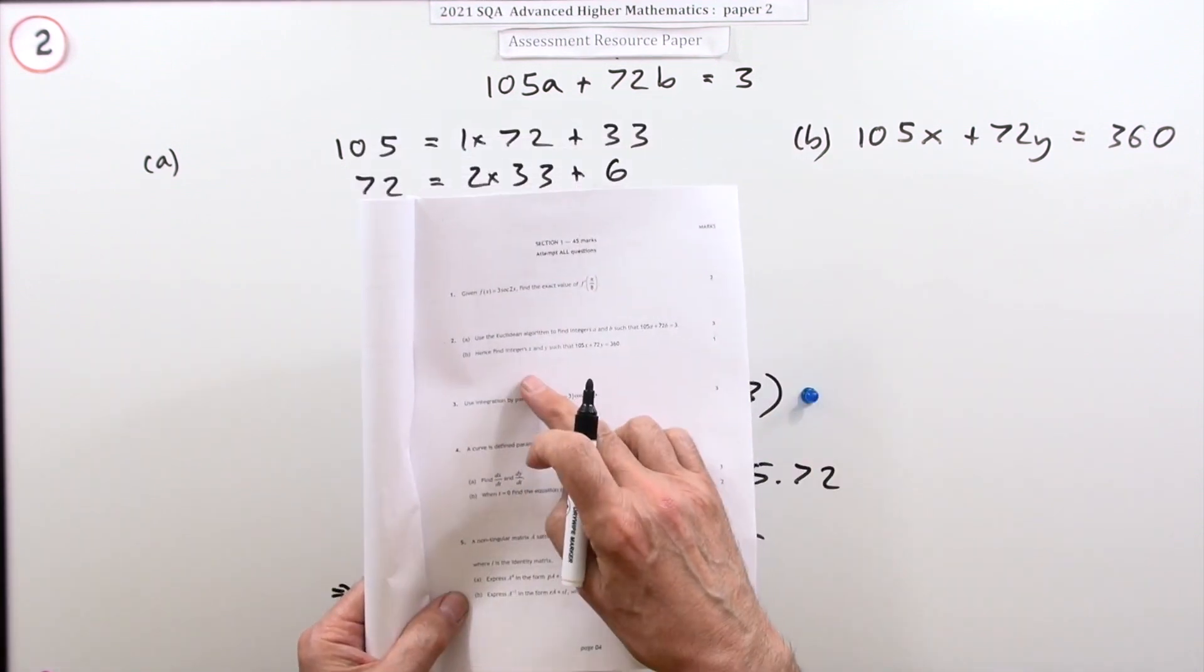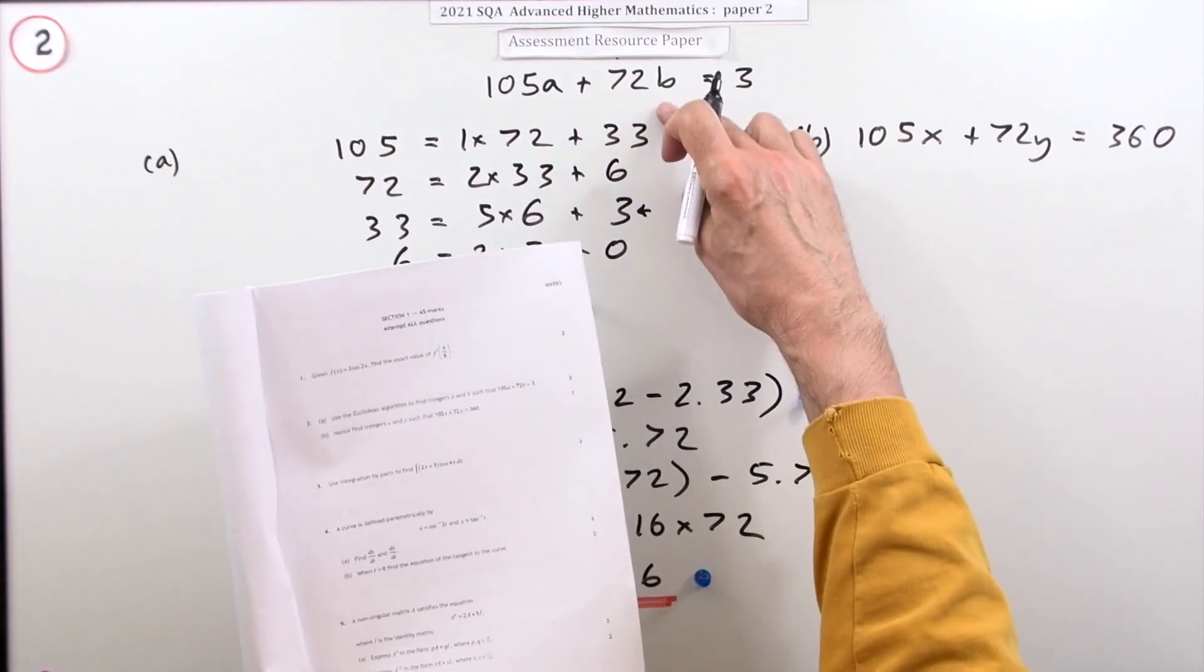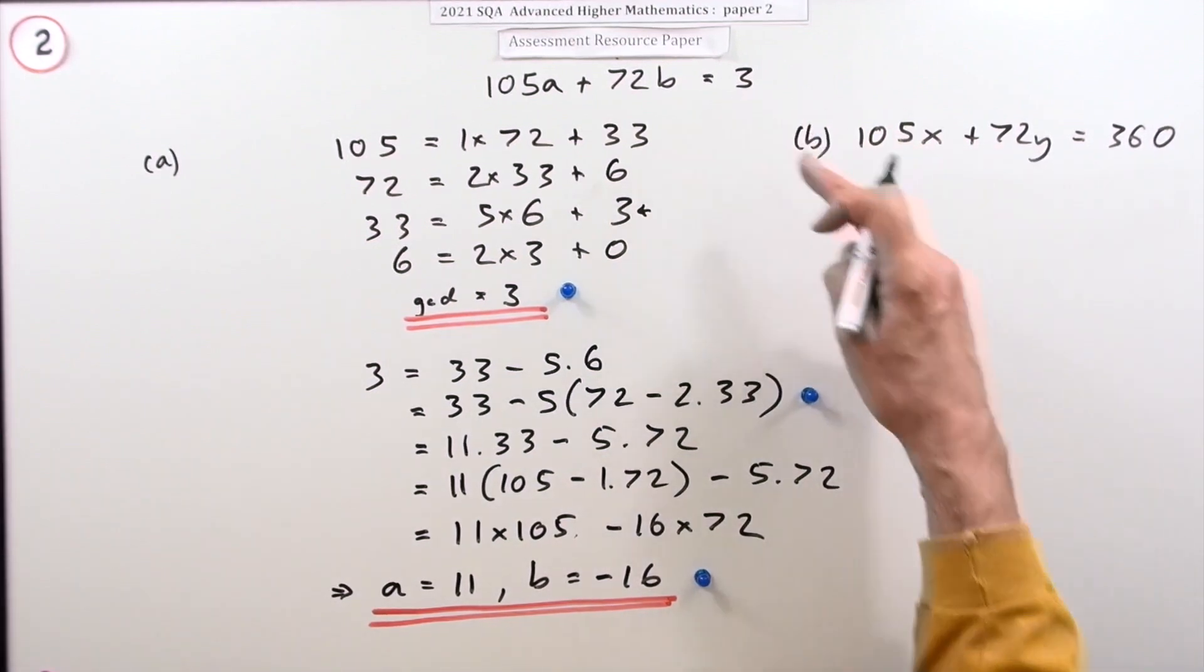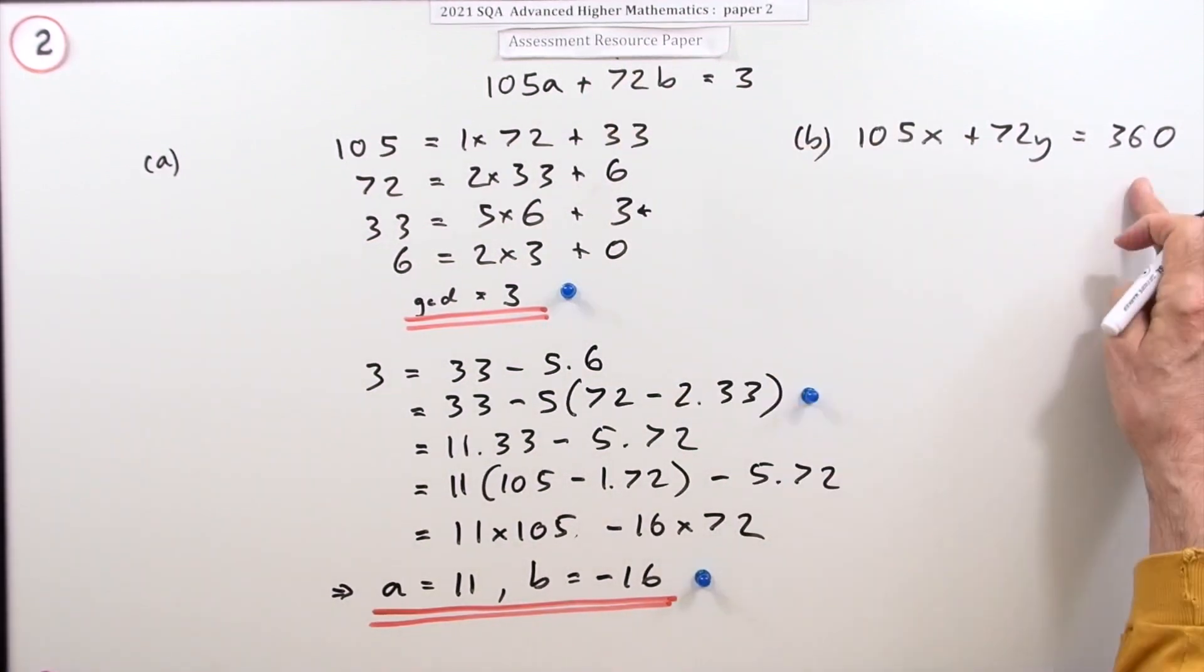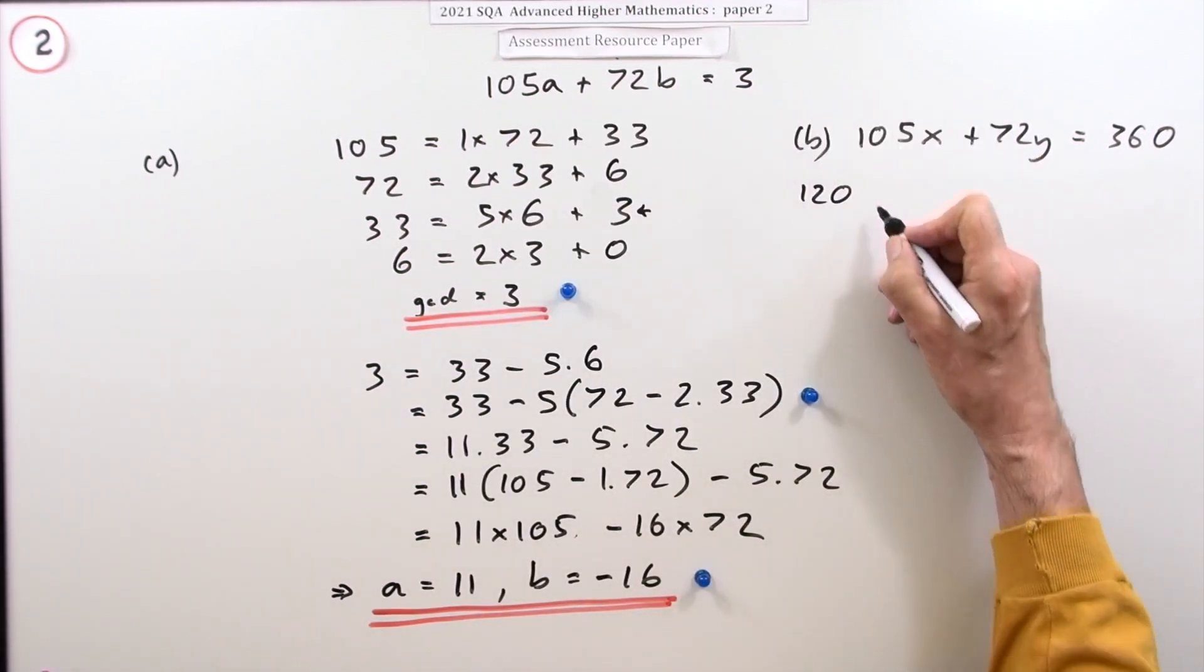In part B, find integers x and y such that 105x + 72y equals 360 this time. If it's to equal more, you'll have to put in more. If it's 120 more, you'll have to multiply by 120. You could say I've got 120 times it.